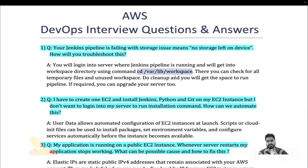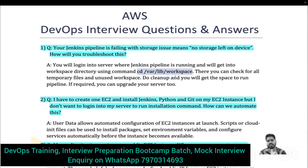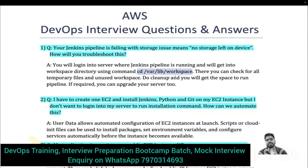Now the second question: you need to create an EC2 instance and install Jenkins, Python, and Git on it. You plan to run git clone to clone a source repository and then run a Python application. For that you need Python, Git, and optionally Jenkins for a local pipeline. But you don't want to log in to the server and manually run installation commands. How can you automate this?